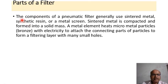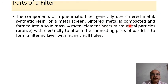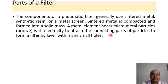Parts of filters: The components of a pneumatic filter generally use sintered metals, synthetic resin, metal, or metal screen. Sintered metal is compact and formed into a solid mass. A metal element heats micrometal particles such as bronze with electricity to attach the connecting parts of the particles, forming a filtering layer with many small holes.